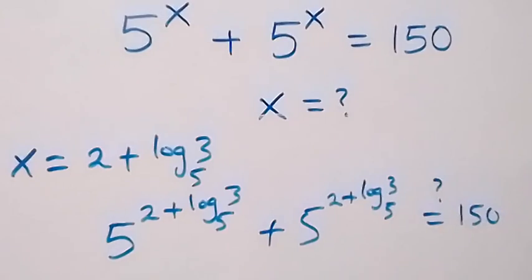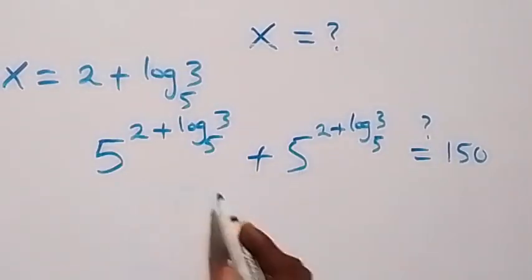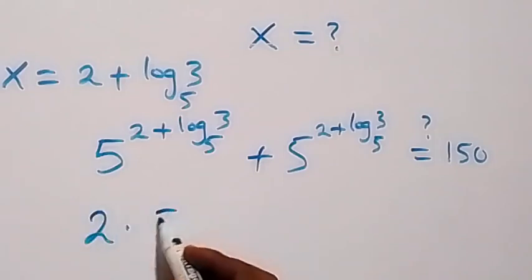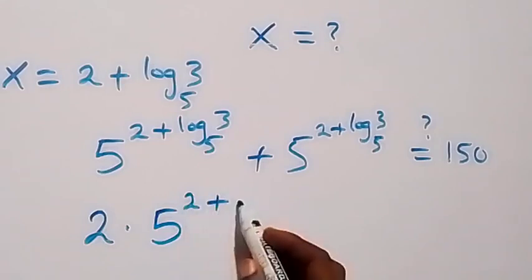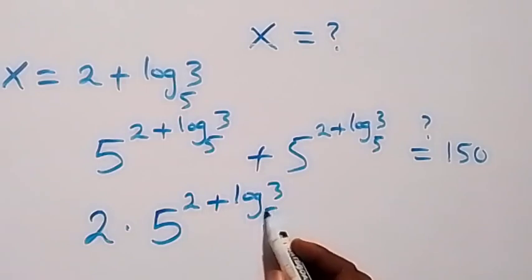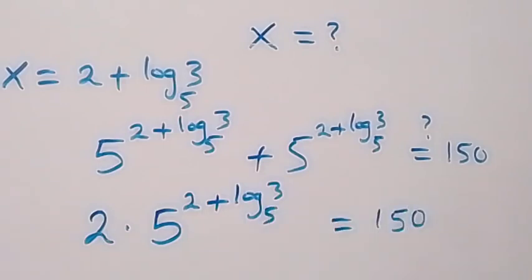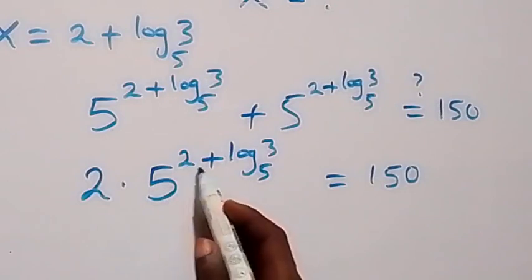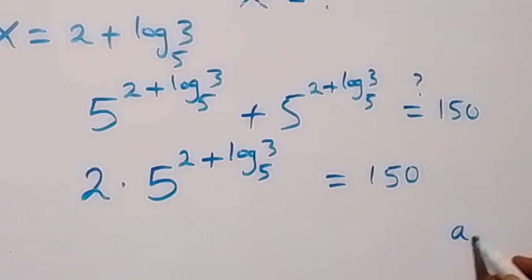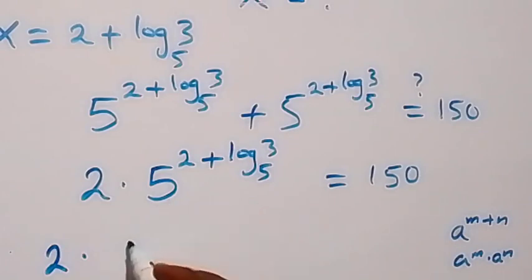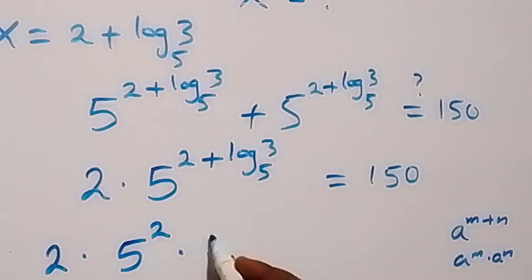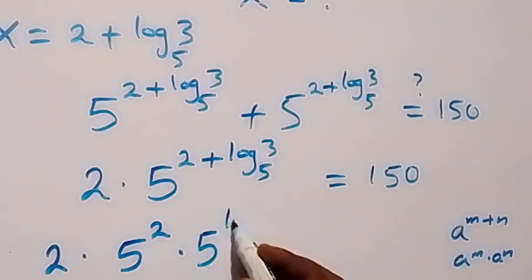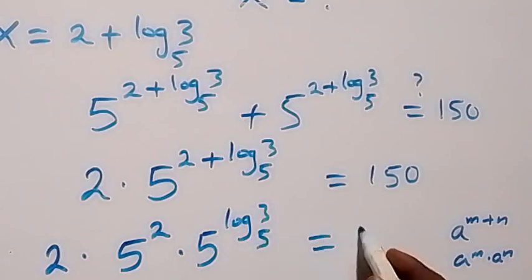Then from here we can separate this. Using the law of indices: a raised to power (n plus n) equals a raised to power n times a raised to power n. Applying this here, this gives us 2 times 5 raised to power 2, times 5 raised to power log 3 to base 5, all equal to 150. This gives us 2 times 25 times 5 raised to power log 3 base 5, which equals 150.